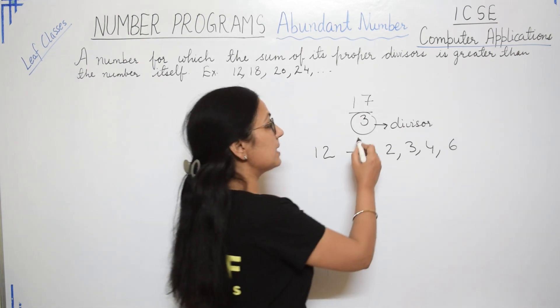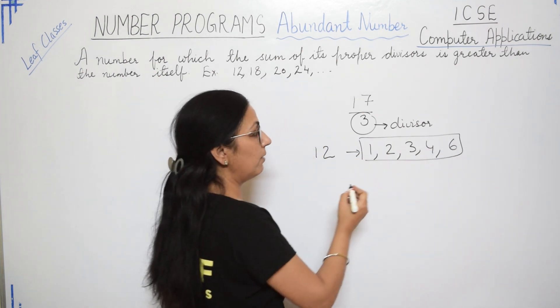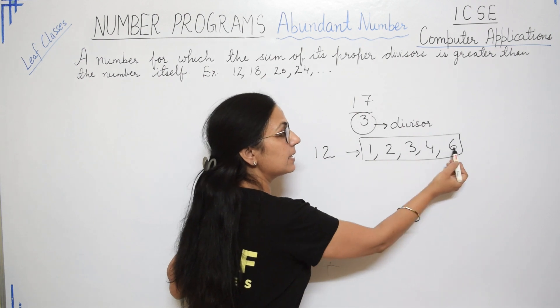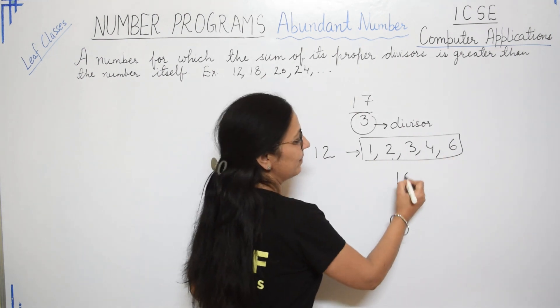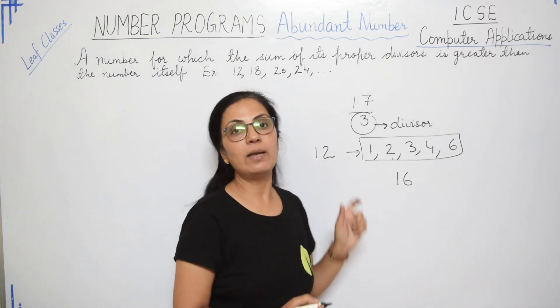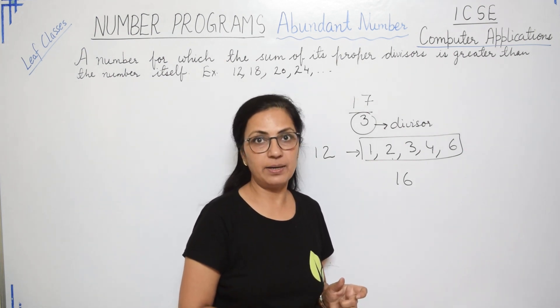Now these are the proper divisors of 12. And if you will add these, you will get the answer as 16. So 16 is more than 12. So 12 is Abundant Number.